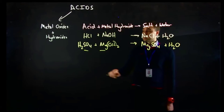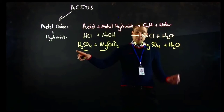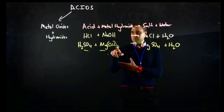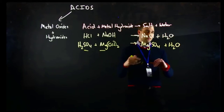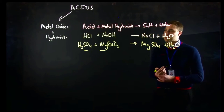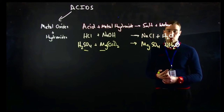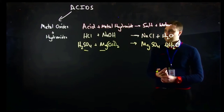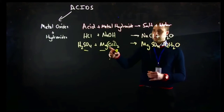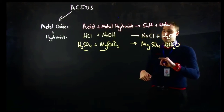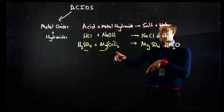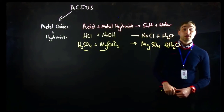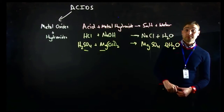Let's check our balancing. Two hydrogens on one side, four hydrogens on the other — so we're going to need to double the amount of water molecules. Checking oxygens: two oxygens, two oxygens; one sulfate ion, one sulfate ion; one magnesium, one magnesium. So it's balanced.